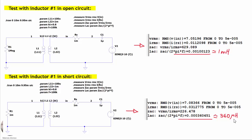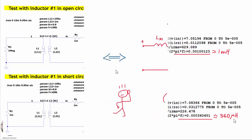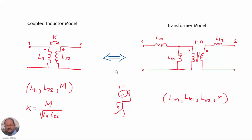Now the initial question remains: what is exactly the relationship between the Coupled Inductor Model and the Transformer Model? In the coupled inductor model we have three parameters, while in the transformer model we have in principle four parameters. So we are going to look into this to find the relationship between both models.